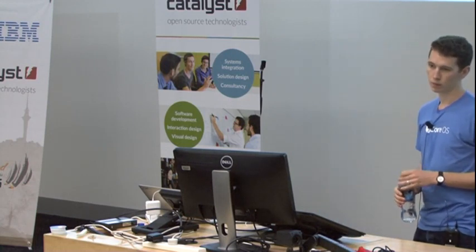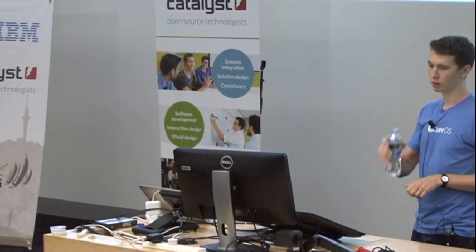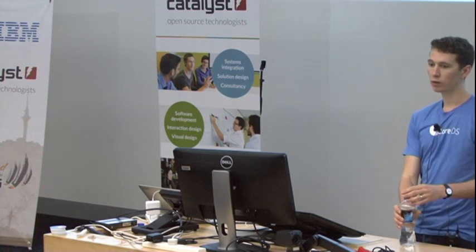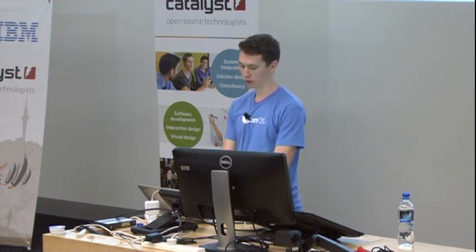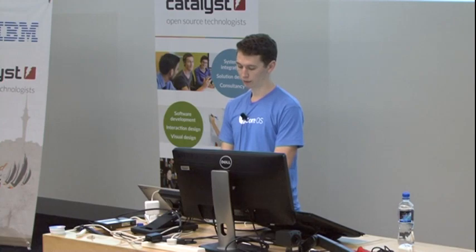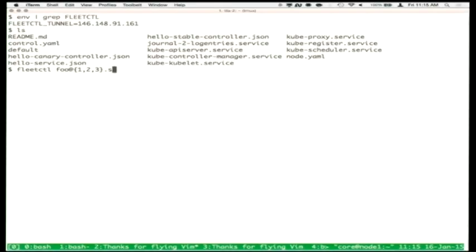The service started on all hosts because global equals true. The pattern we use if you want to start five of something is template expansion — you say whatever the name of your unit is, then at-sign, then some identifier. The other examples in this talk will be around Kubernetes, which has a slightly different way of doing replication. This is a systemd pattern of doing a templated unit — you say whatever the name of your unit is and then at-sign and some identifier.